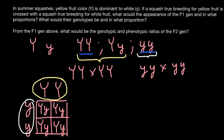All four boxes give capital Y small y, which means the entire F1 generation would be heterozygous (Yy) and phenotypically yellow. So the answer to the first question is that all progeny of this cross would produce plants with yellow fruits.